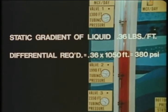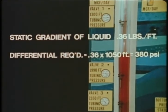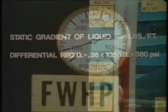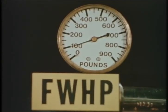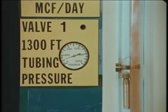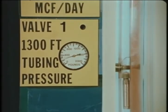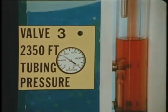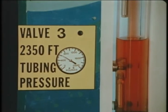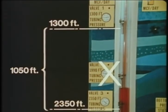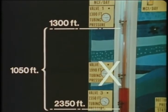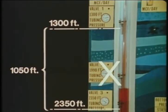With a casing pressure of 550 PSI, a differential of 380 PSI would mean that the tubing pressure at the number one valve would have to be 170 PSI or less. With the present wellhead pressure reading 100 PSI, the tubing pressure of 210 PSI shows that we have not attained the 170 PSI or less at 1,300 feet. So the third valve at 2,350 feet will never be uncovered. The model shows that unloading has stopped and that the number three valve at 2,350 feet has not been uncovered. This valve cannot be uncovered because the valve spacing is too wide.